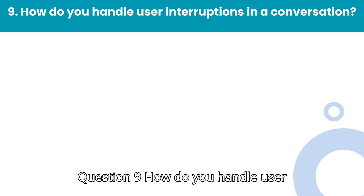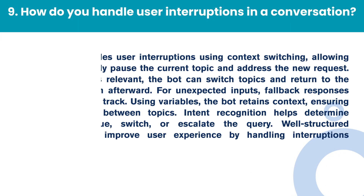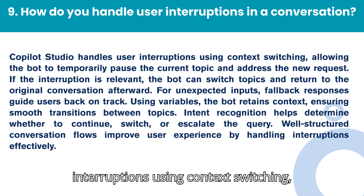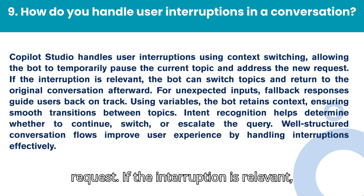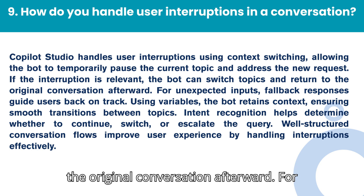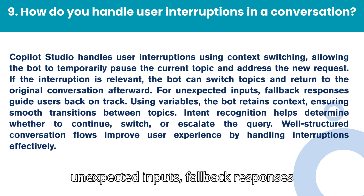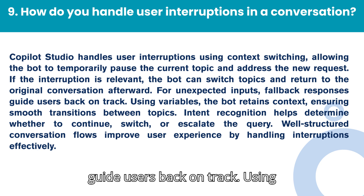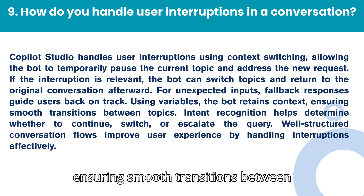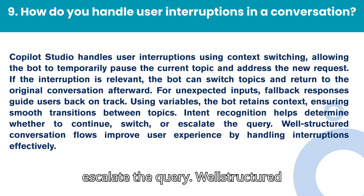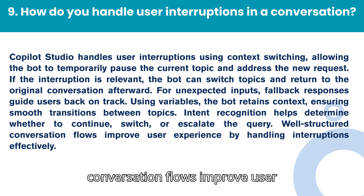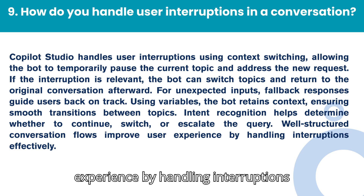Question 9: How do you handle user interruptions in a conversation? Co-Pilot Studio handles user interruptions using context switching, allowing the bot to temporarily pause the current topic and address the new request. If the interruption is relevant, the bot can switch topics and return to the original conversation afterward. For unexpected inputs, fallback responses guide users back on track. Using variables, the bot retains context, ensuring smooth transitions between topics. Intent recognition helps determine whether to continue, switch, or escalate the query. Well-structured conversation flows improve user experience by handling interruptions effectively.